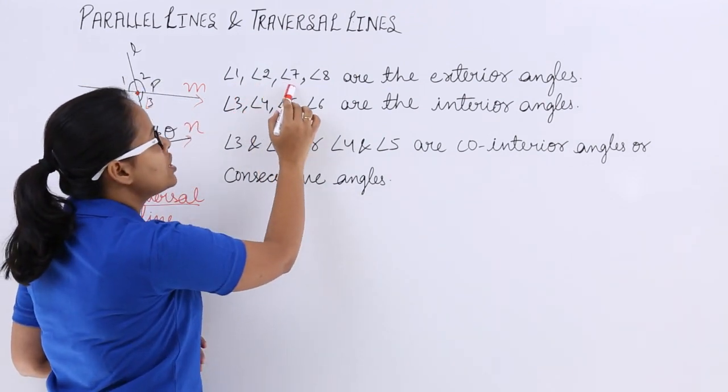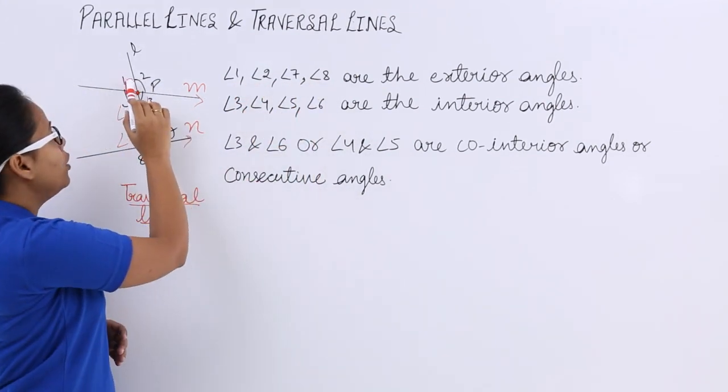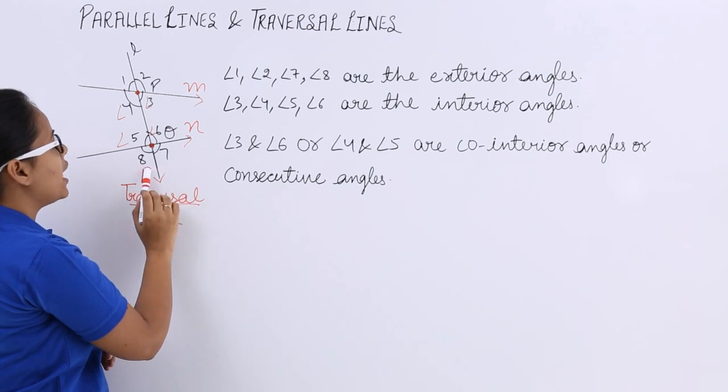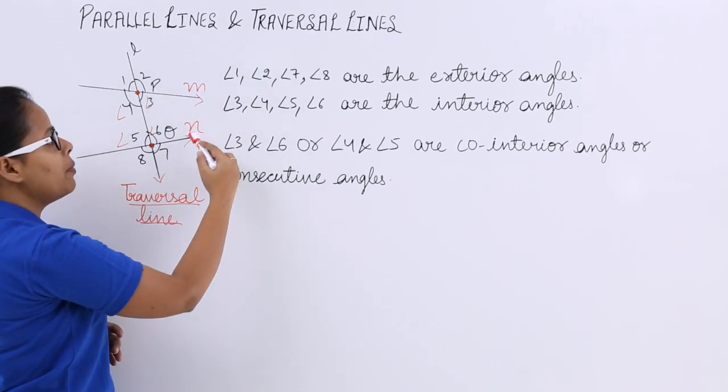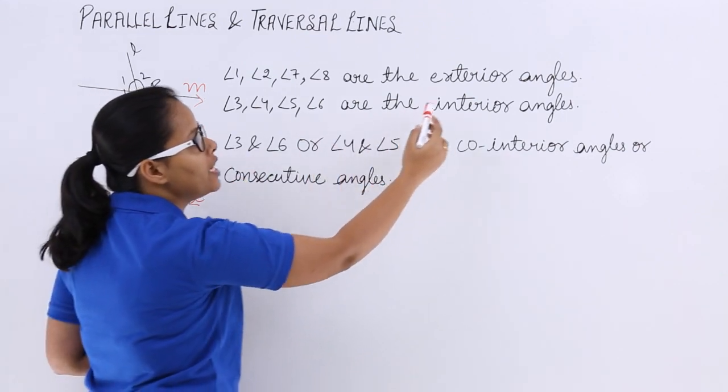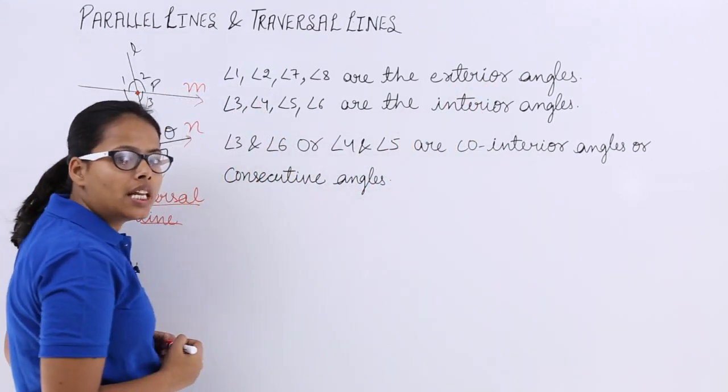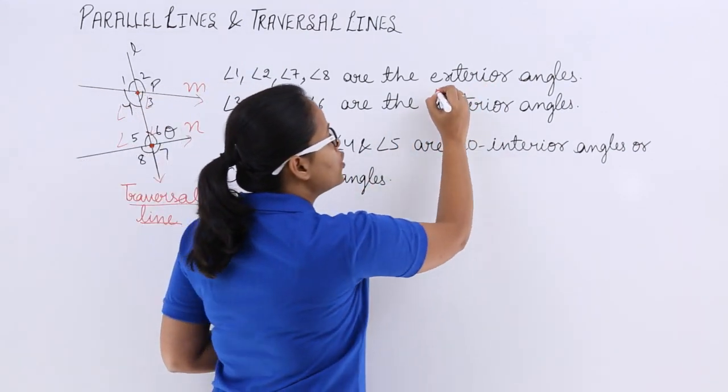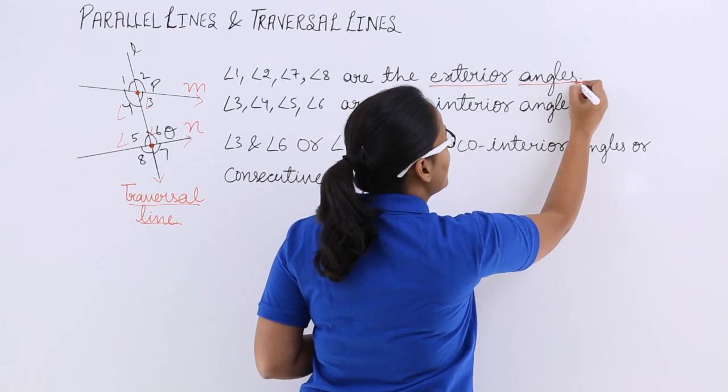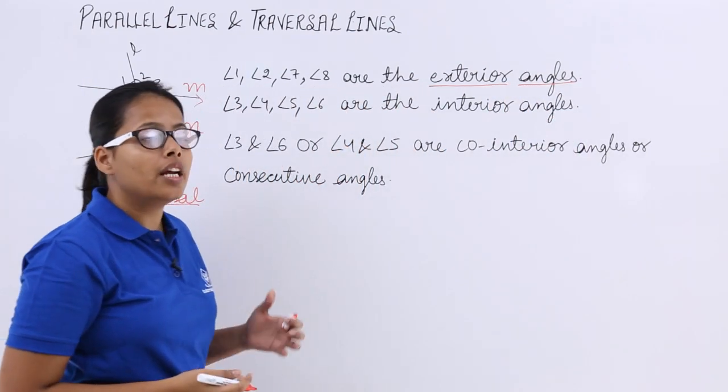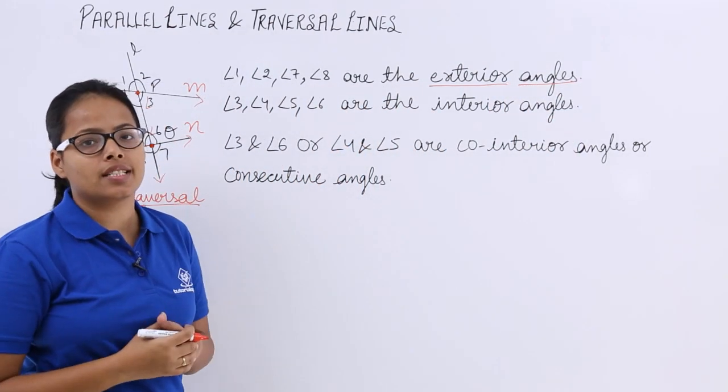Angles 1, 2, 7, 8—you can see here angles 1, 2, 7, 8. These angles are lying outside of M and outside of N, that's why these are mentioned as exterior angles. You should be very much familiar with these angles as you have already studied in your previous class what are the exterior angles.